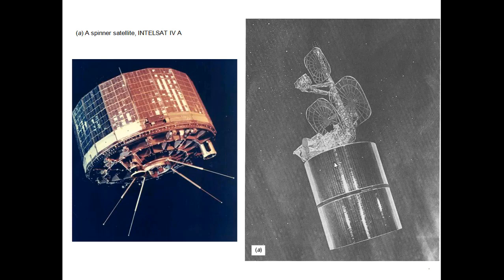The spin stabilized satellites are made to spin on their axis. When the satellite is in proper orbit, a jet thruster is fired to begin spinning the satellite. These satellites are also called spinner satellites. A typical spin stabilized satellite rotates at approximately 30 to 100 rpm. This creates a gyroscopic or flywheel effect that keeps the satellite pointing in one direction and provides stability of the spin axis, just like spinning a top. Small radial gas jets are mounted on the periphery of the drum for this purpose.